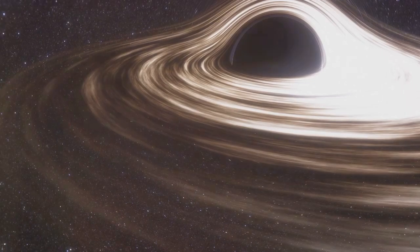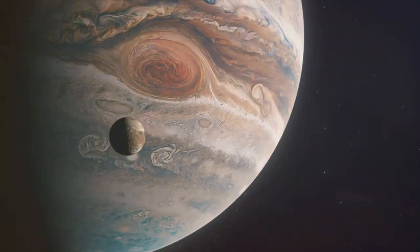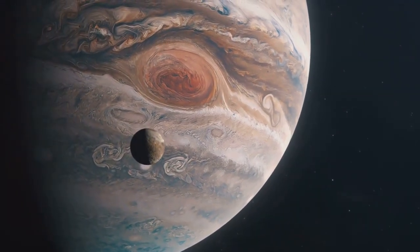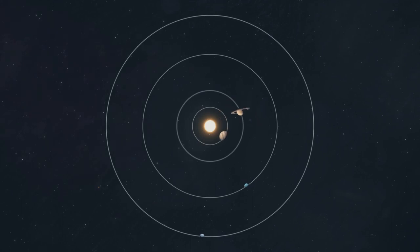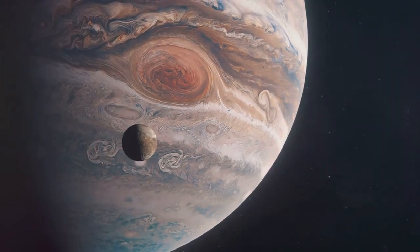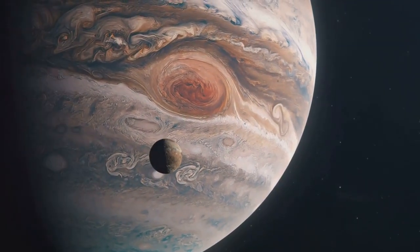One particularly fascinating phenomenon that emerges from these interactions is called orbital resonance. This occurs when two orbiting bodies exert regular periodic gravitational influences on each other. In the context of planetary rings, this happens when a particle in the ring and a moon of the planet have orbits that are in a simple numerical ratio. For example, if a particle completes two orbits in the same time it takes a moon to complete one orbit, they're in a two-to-one orbital resonance.